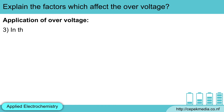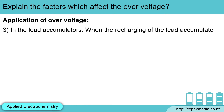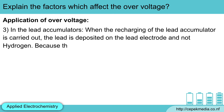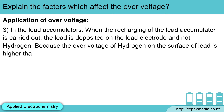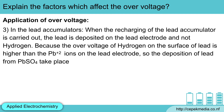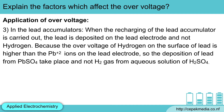Third, in lead accumulators, when the recharging of the lead accumulator is carried out, lead is deposited on the lead electrode and not hydrogen, because the overvoltage of hydrogen on the surface of lead is higher than that of lead ions on the lead electrode. So the deposition of lead from lead sulfate takes place, and not hydrogen gas from the aqueous solution of sulfuric acid.